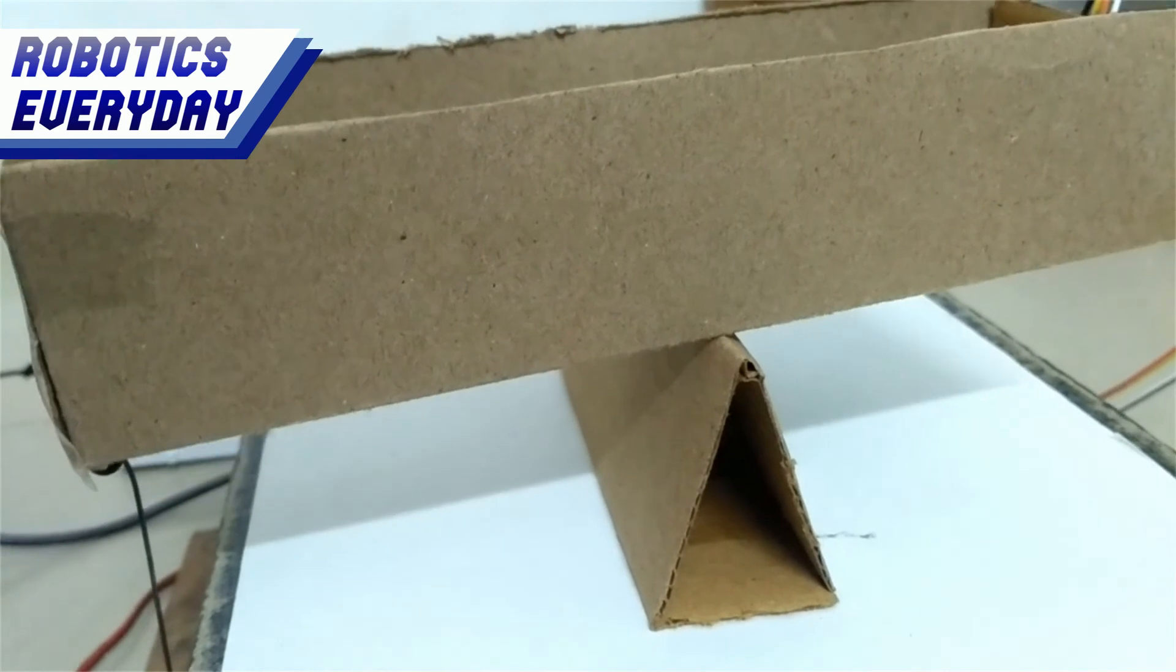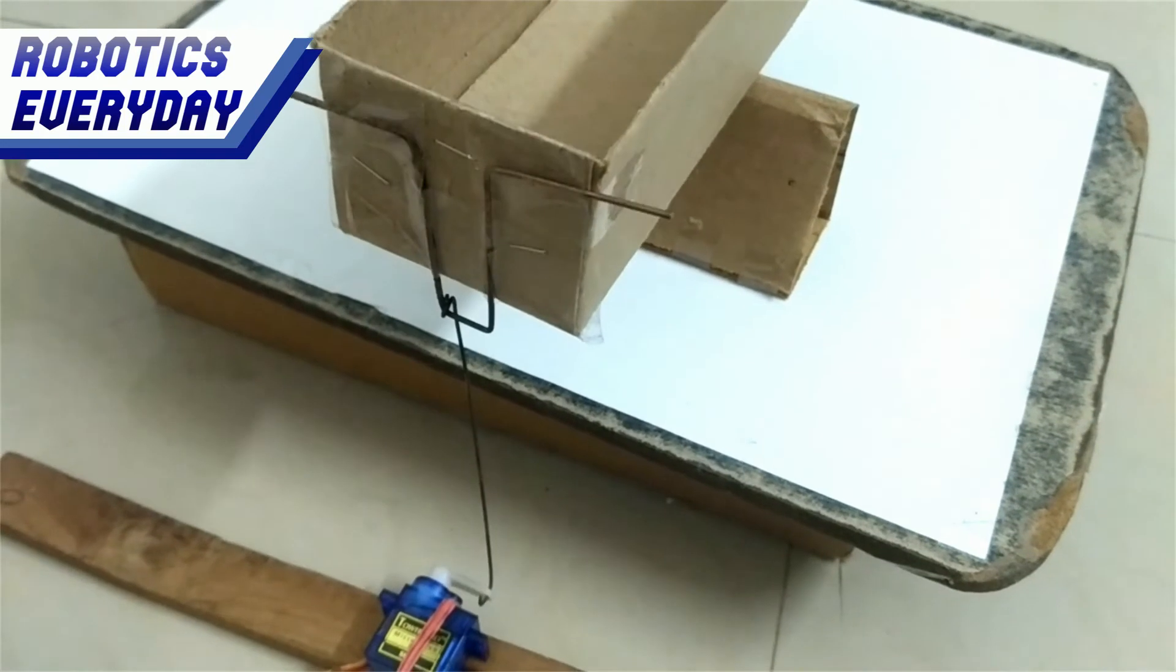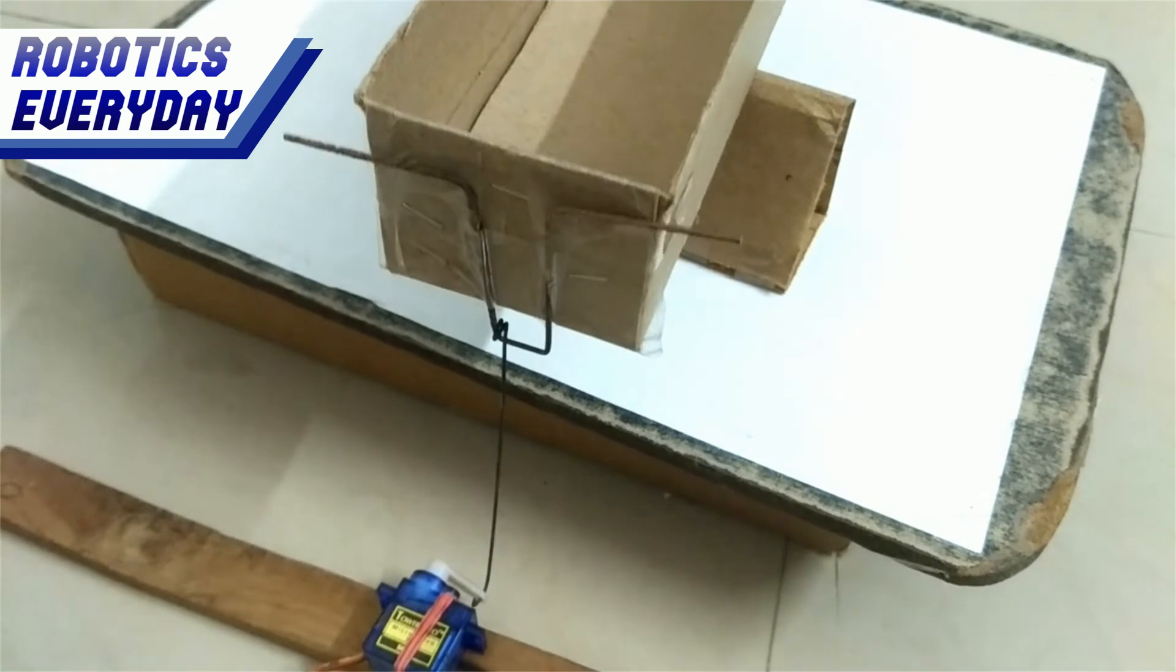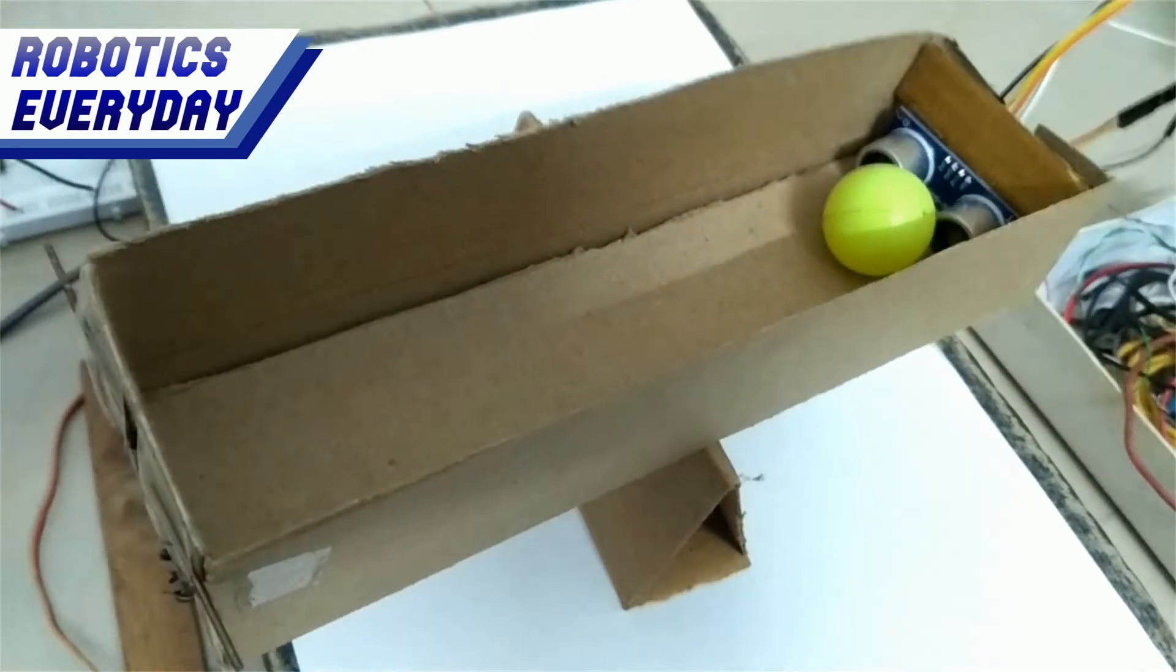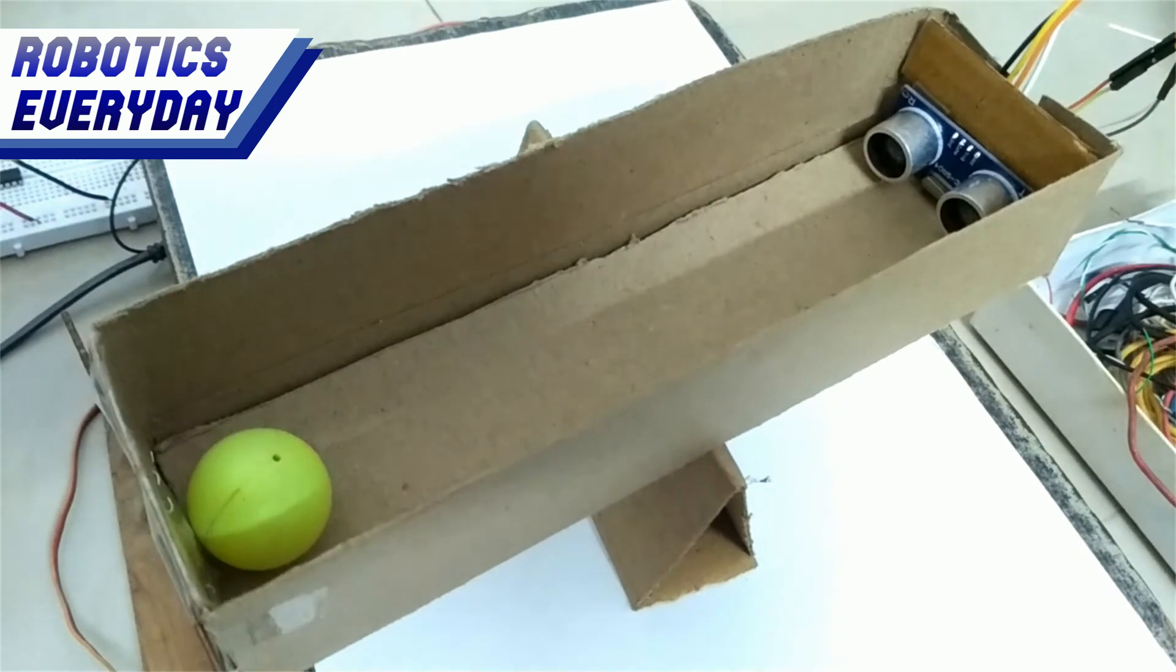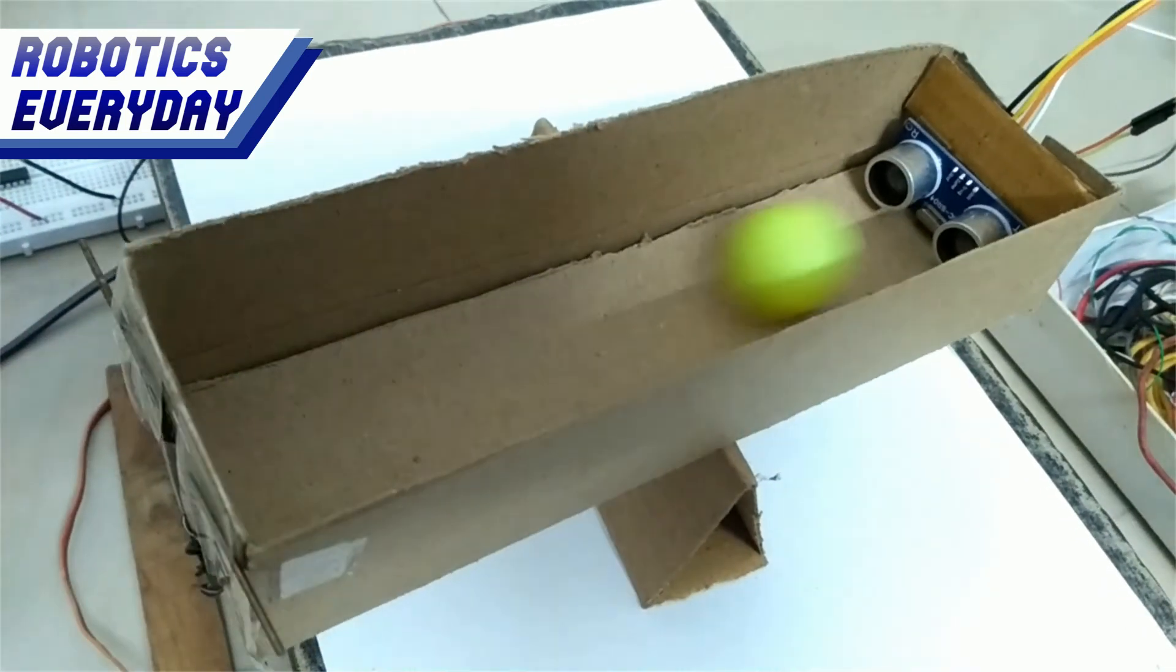The top box will be free to move up and down. We have attached the motor to the box through a wire, and we can see that the box now moves up and down. At the other end of the box, we have attached an ultrasonic sensor. This sensor measures the distance between itself and the ball in front of it.